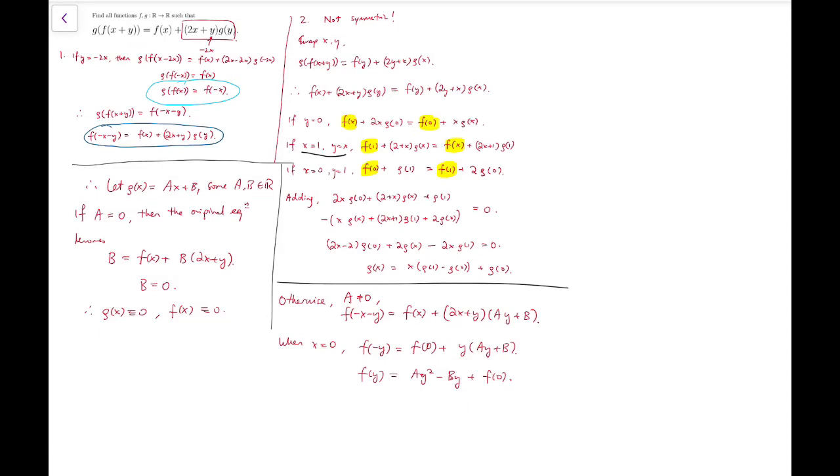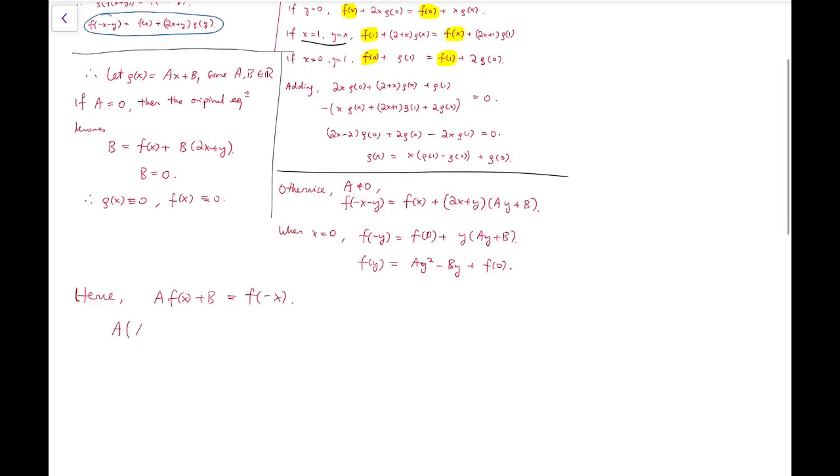Now I'm going to put this into the simpler equation g(f(x)) = f(-x). Hence, a·f(x) + b = f(-x). And a(ax² - bx + f(0)) + b = ax² + bx + f(0). Now I can compare coefficients on both sides. Then a² = a, and because a is not 0, a must be 1.